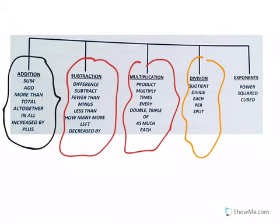Division: The quotient of. Divide or divided by. Each. Per. Or split. Split something in two, right? You're dividing it in two. Split it in three, you're dividing it by three.